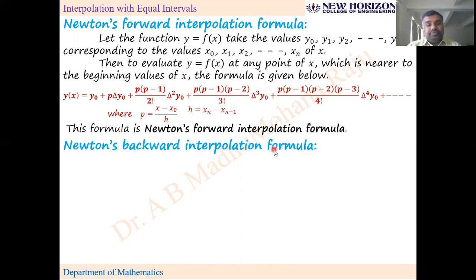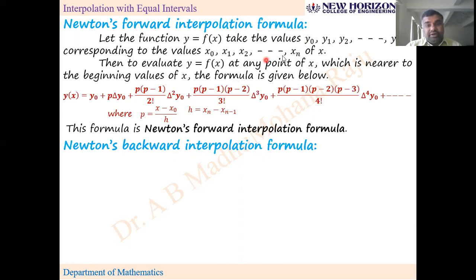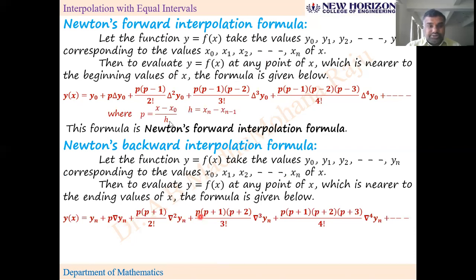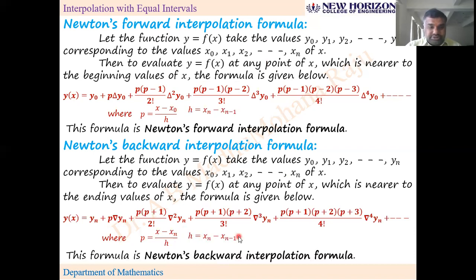Newton's backward interpolation formula is used whenever you have to find y at an x value nearer to the ending values of x. The formula has the same structure but uses backward differences instead of forward differences, and here p = (x − xₙ) / h. The sign pattern changes from minus to plus in the terms. This is called Newton's backward interpolation formula.